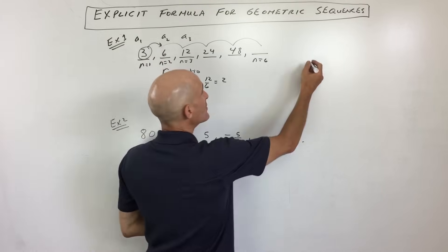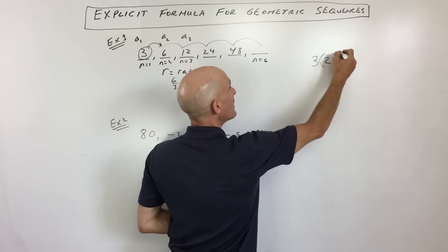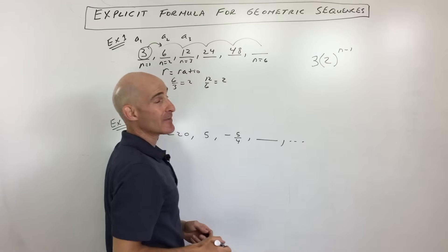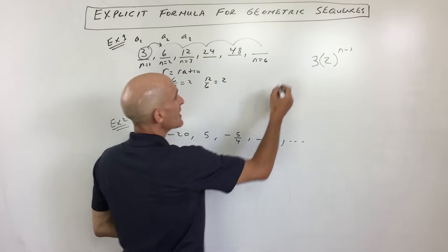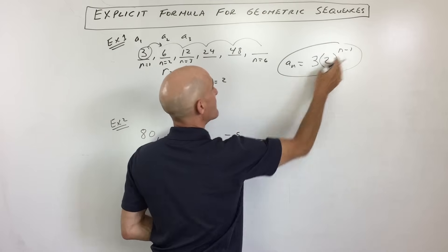So if we think about what we just did, we took the first value, which is 3, we multiply by 2, n minus 1 times. So in this case, that's our formula. So a sub n equals 3 times 2 to the n minus 1.